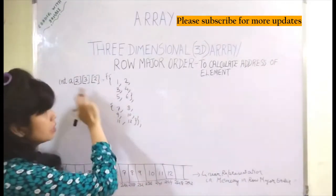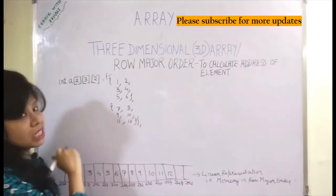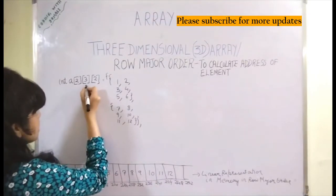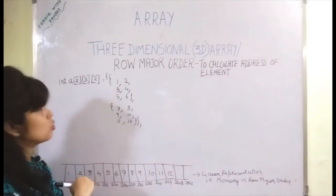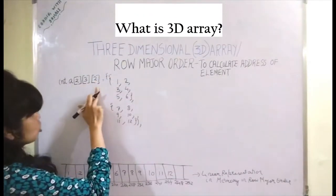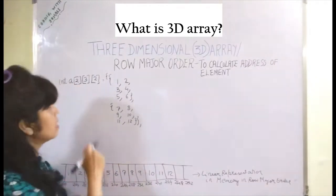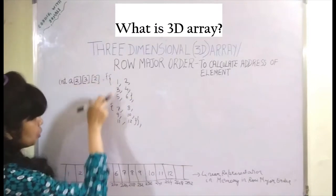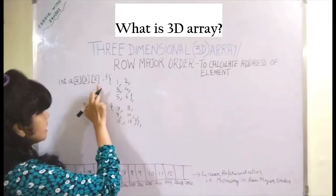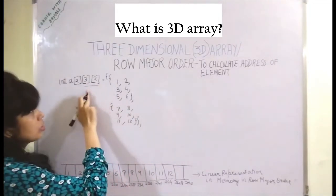We are taking the same example of the 3D array seen earlier. A 3D array has three dimensions, so we have to give three sizes. The first subscript tells how many elements it contains — here it is two elements. Each element in case of a 3D array is itself a 2D array of dimension 3 by 2.